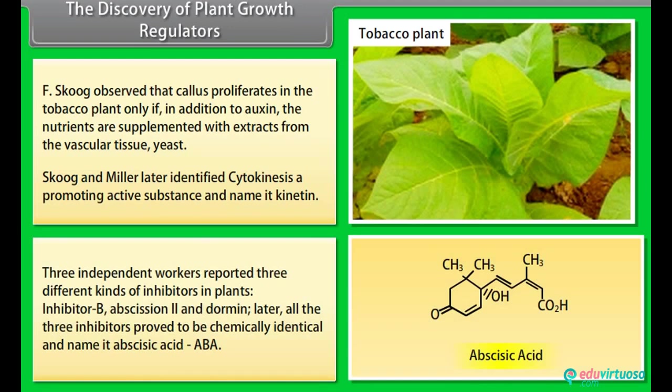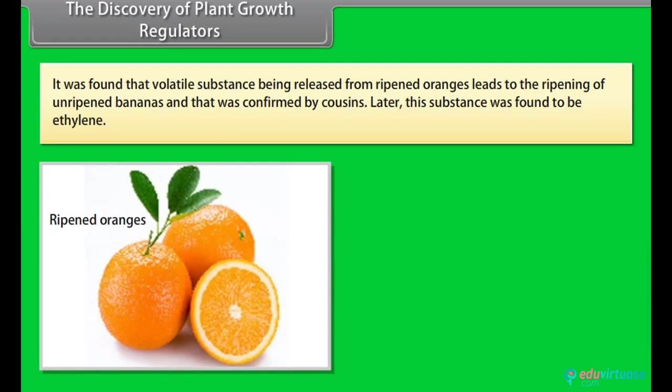Three independent workers reported three different kinds of inhibitors in plants: inhibitor B, abscissin-2 and dormin. Later, all the three inhibitors proved to be chemically identical and named it abscisic acid, ABA. It was found that volatile substance being released from ripened oranges leads to the ripening of unripened bananas and that was confirmed by Cousins. Later, this substance was found to be ethylene.